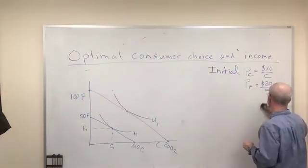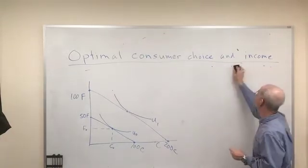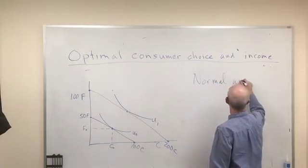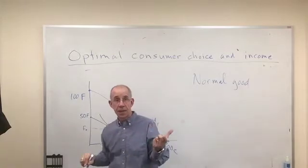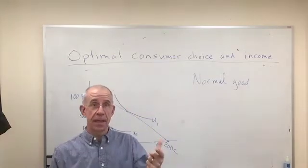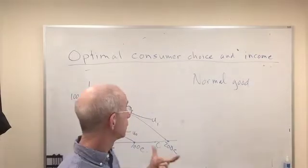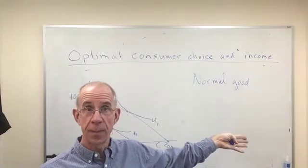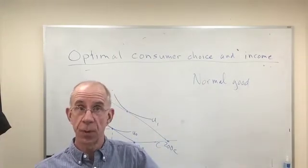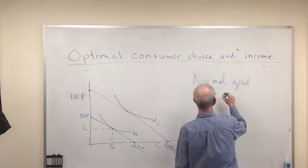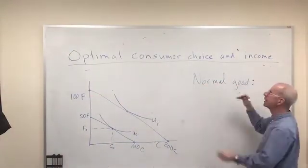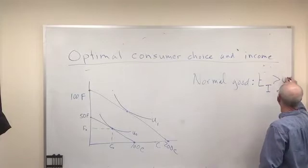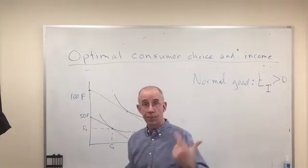That is an example of what we call a normal good. Now there's a separate video about the income elasticity of demand and you'll see that this is exactly what we were talking about there. You increase income, you purchase more of both goods. That elasticity of demand, the income elasticity of demand, is greater than zero. We buy more of both goods.